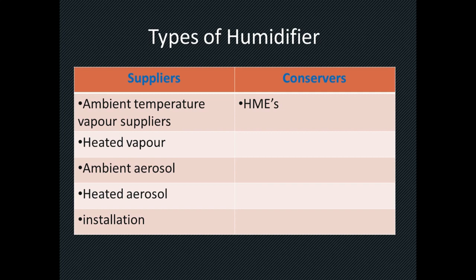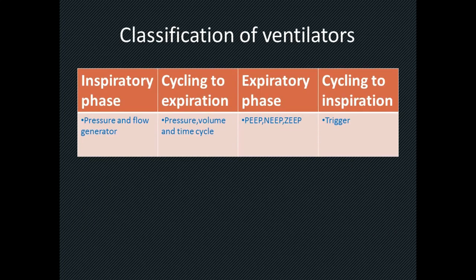The next flowchart covers types of humidifiers. A humidifier is a device used to provide humidified oxygen in a low-flow oxygen delivery system. The humidifier chamber should always be filled with water. There are two types: suppliers and conservers. Suppliers include ambient temperature vapor supplier, heated vapor supplier, ambient aerosol supplier, heated aerosol supplier, and instillation. The conserver is the Heat and Moisture Exchanger (HME) — a device seen in ventilator circuits that connects patient and machine tubing via an internal sponge.